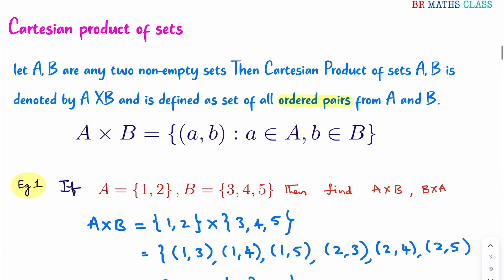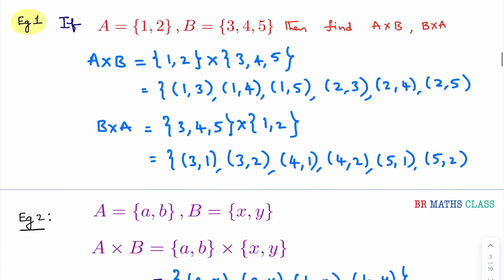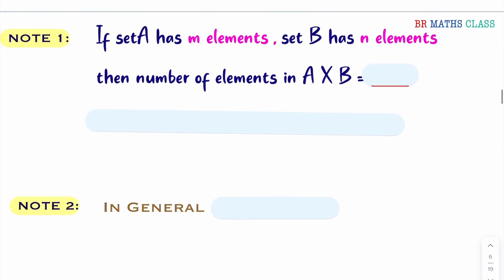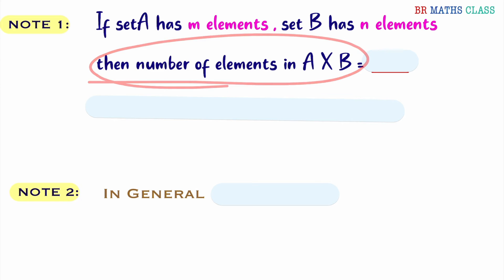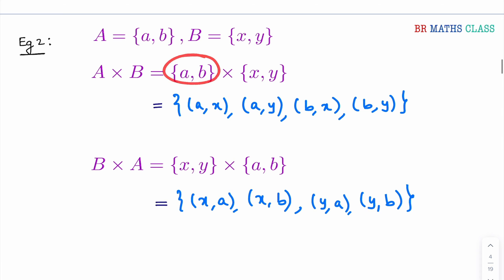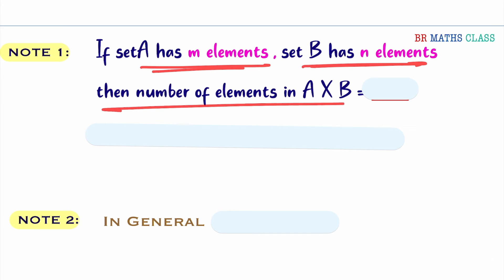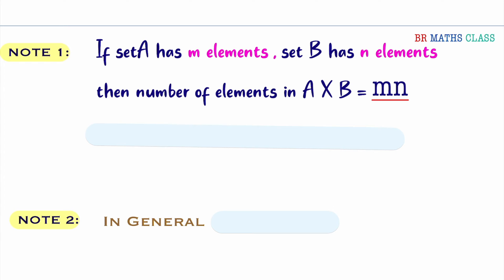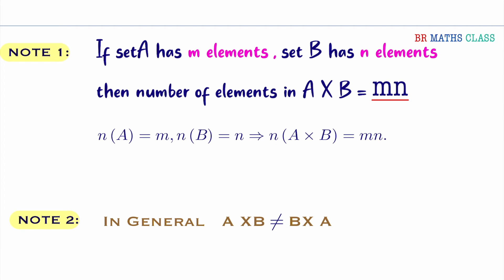We are in the Relations and Functions chapter. Before going to the definition of relation, we learned what is meant by Cartesian product of sets. In this topic, some note points are there. Note 1: if set A has M elements and set B has N elements, the number of elements in A cross B is MN. For example, set A contains 2 elements, set B contains 2 elements, so A cross B contains 2 × 2 = 4 elements. So if set A has M elements and set B has N elements, the number of elements in A cross B is MN.